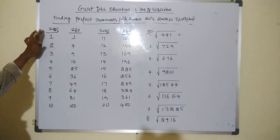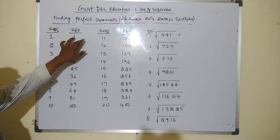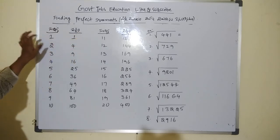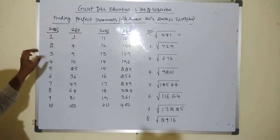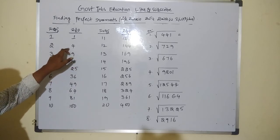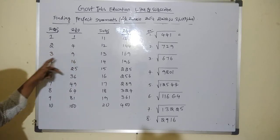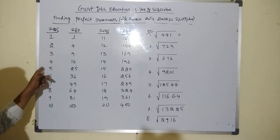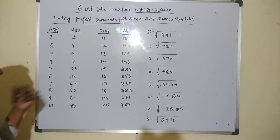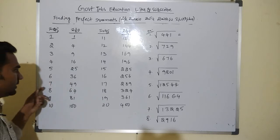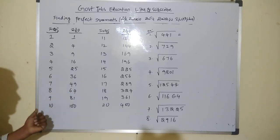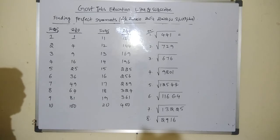So we will find out: 1 square is 1, 2 square is 4, 3 square is 9, 4 square is 16, 5 square is 25, 6 square is 36, 7 square is 49, 8 square is 64, 9 square is 81, and 10 square is 100.